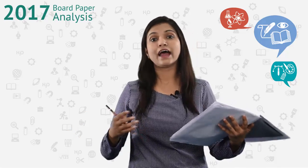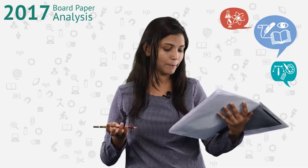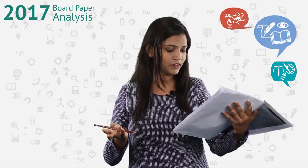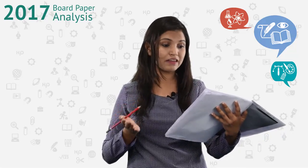The next question asks us to find out the characteristics of the image formed by a convex mirror. The object distance and focal length are given, but we need not use the mirror formula here, because we straightaway know that images formed by convex mirrors are always erect, small in size, virtual, and formed behind the mirror. Two marks again in our pocket.